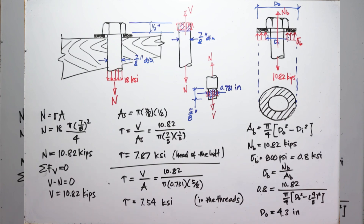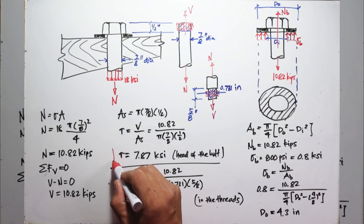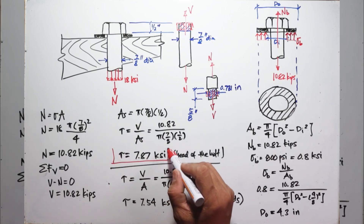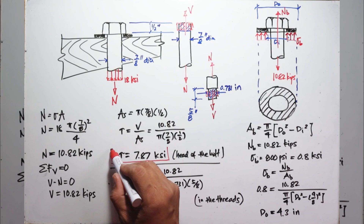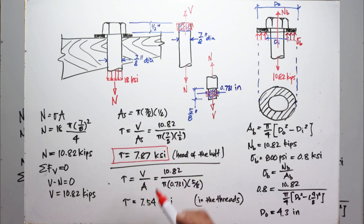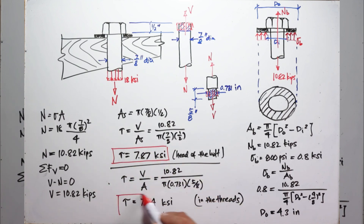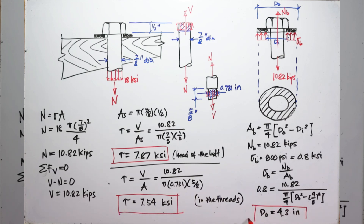These are our answers: the shearing stress in the head of the bolt is 7.87 KSI, the shearing stress in the threads is 7.54 KSI, and the outside diameter of the washer is 4.3 inches.